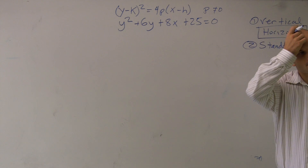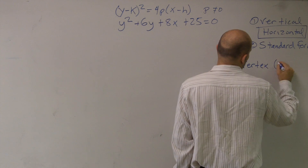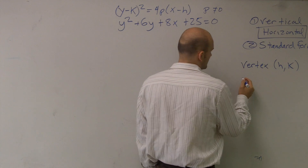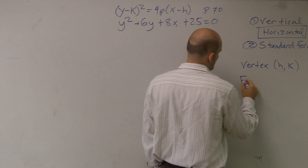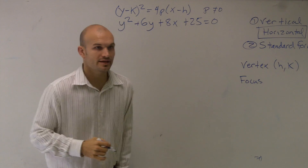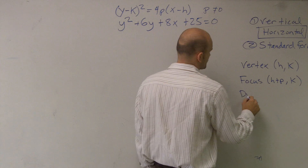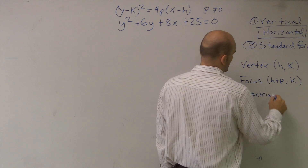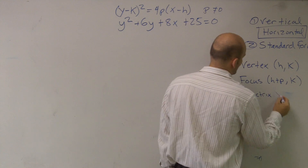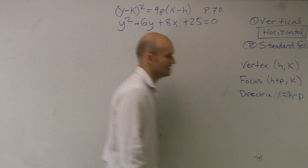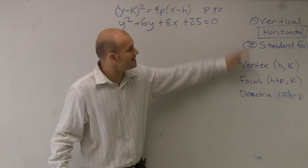For this problem, let's write out our rules. Our vertex is (h, k). Our focus is going to be (h plus p, k). And our directrix is going to be x equals h minus p. Those are the basics that will help us, and I know them because I know I'm dealing with the horizontal form.